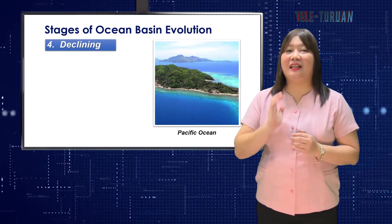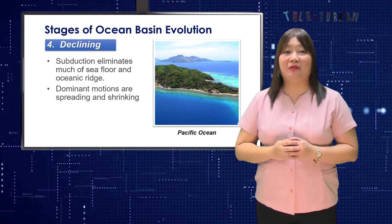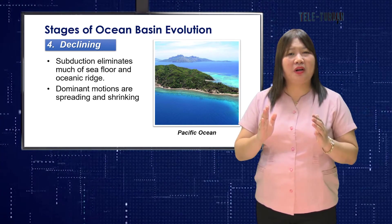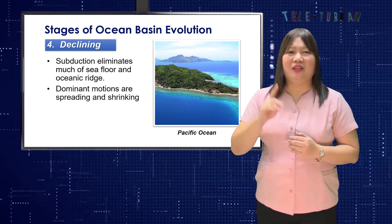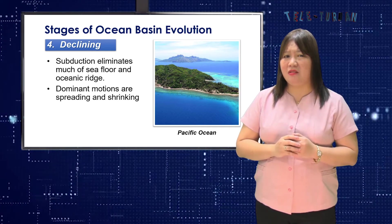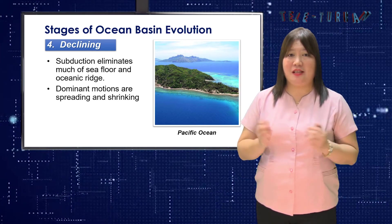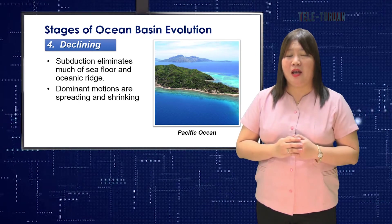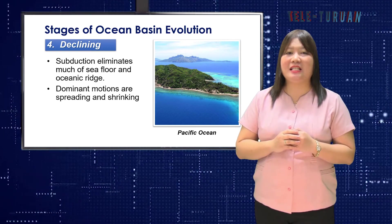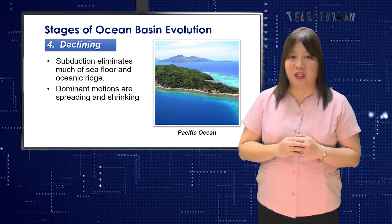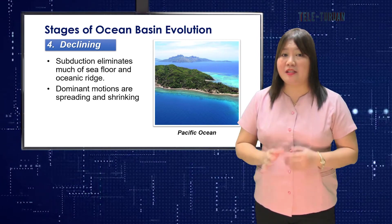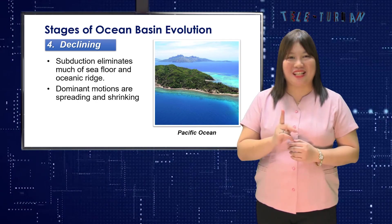Stage 4 is a declining ocean basin, when subduction eliminates much of the seafloor and oceanic ridges. The reason for the formation of new destructive margins probably lies in changing circumstances in another part of the globe, such as continental collision or the initiation of new continental rifting. Dominant motions are spreading and shrinking. An example is the Pacific Ocean.